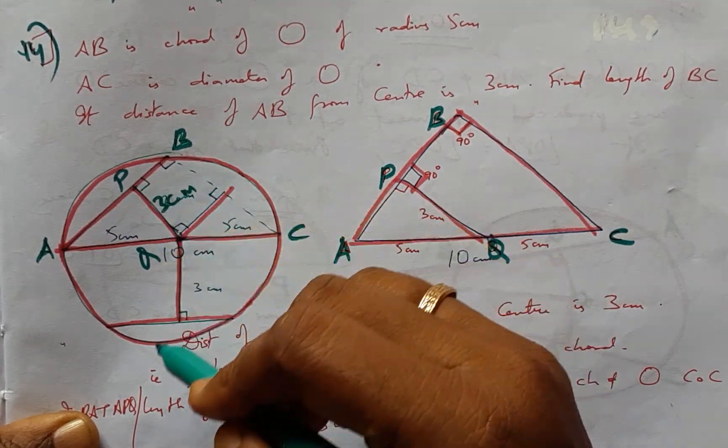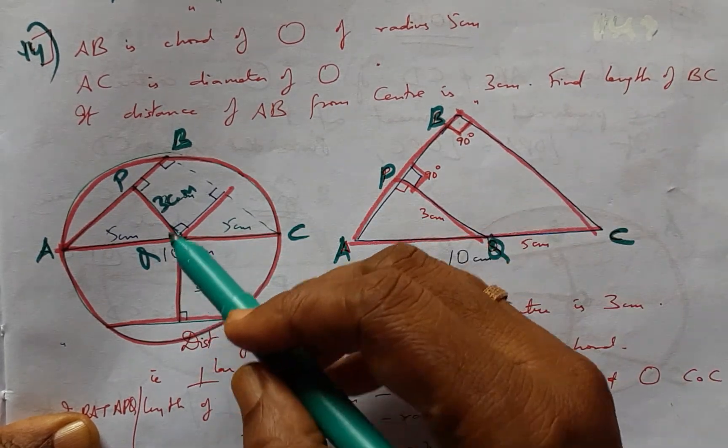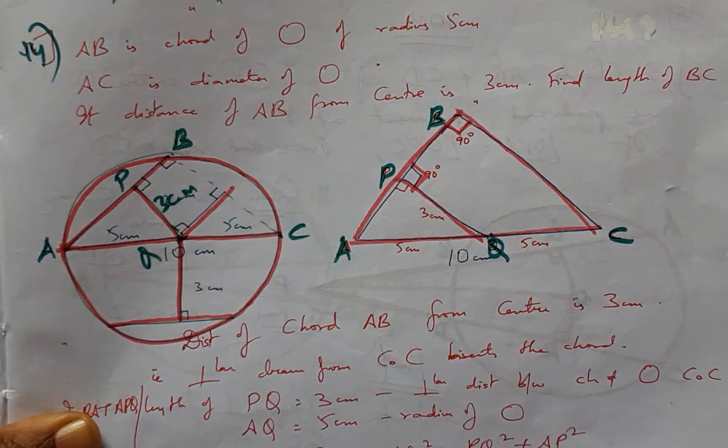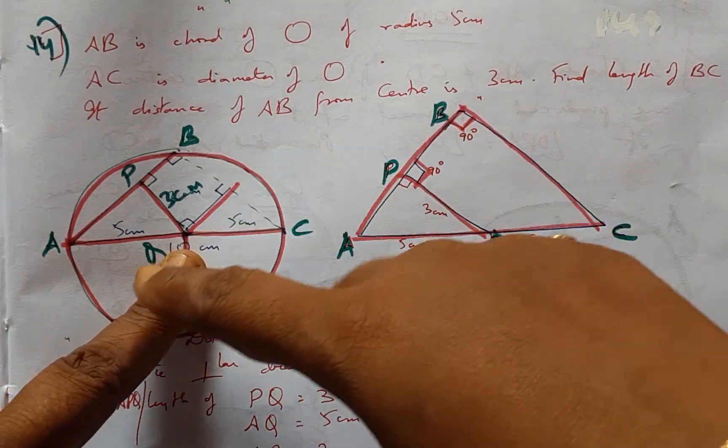Now we are required to find the length of BC, the other chord. There are several hints in the question.